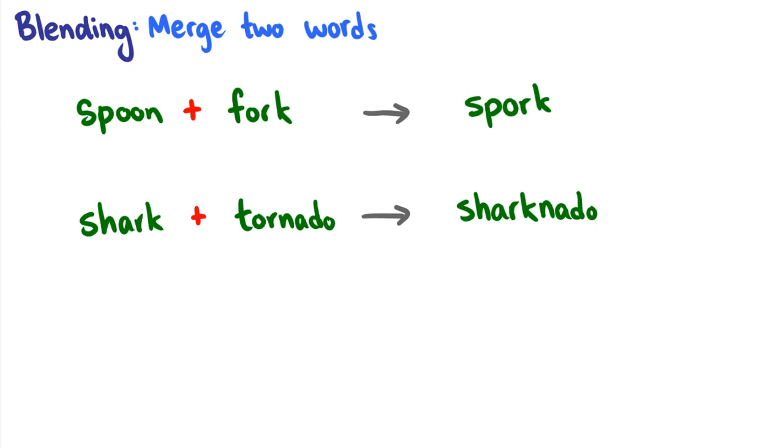Blending is when we take two words and we merge them together. So this isn't compounding where we leave the words the same. This is when we take some sounds from the first word, some sounds from the second word, and we merge it together. For instance, in the word spork, that comes from spoon, the sp in spork, and then the orc in fork makes the orc in spork. So you have sp, spoon, and orc from fork coming together to make the word spork.